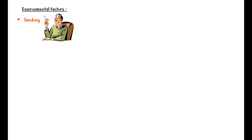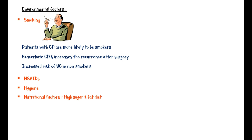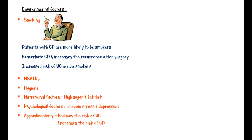Regarding environmental factors, smoking is one of the major triggers. Patients with Crohn's disease are more likely to be smokers, and smoking exacerbates Crohn's disease and increases the risk of disease recurrence after surgery. Interestingly, there is an increased risk of ulcerative colitis in non-smokers. In addition to smoking, NSAIDs, hygiene, nutritional factors such as high sugar and high fat diet, and psychological factors like chronic stress and depression are likely to increase IBD risk. Appendicectomy reduces the risk of ulcerative colitis but increases the risk of Crohn's disease.